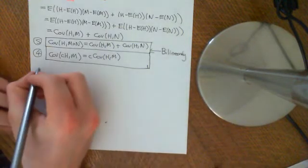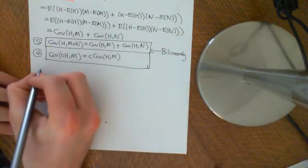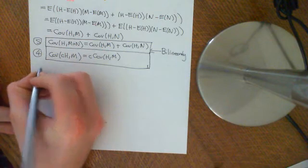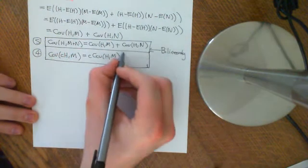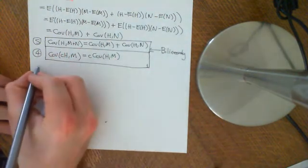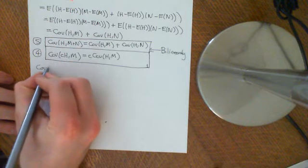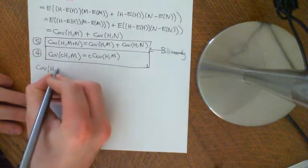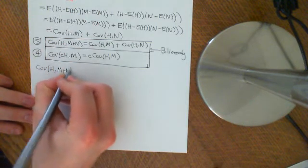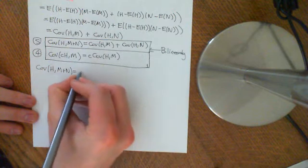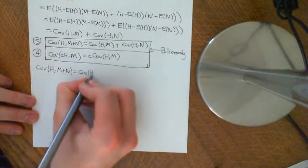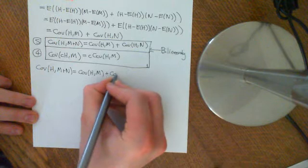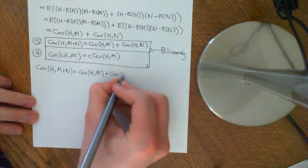Let's handle the covariance of sums. Let's firstly generalise this result: we have that the covariance of h and m plus n is equal to the covariance of h and m plus the covariance of h and n.